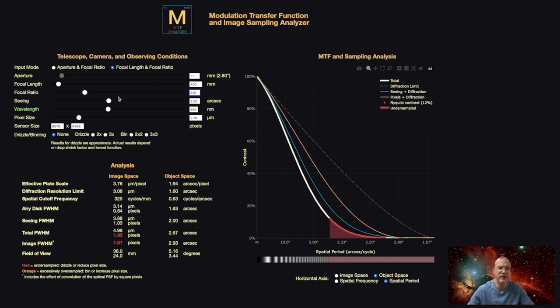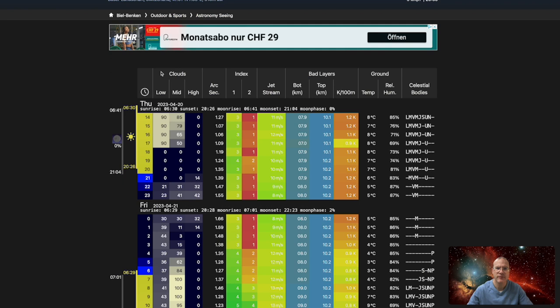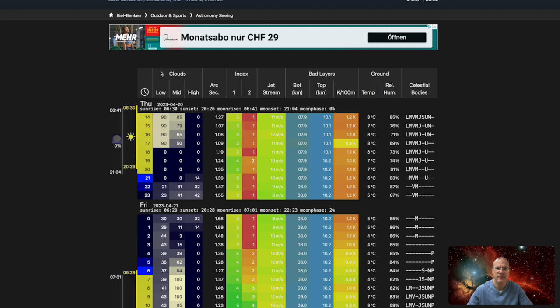Now, the next thing we have to enter is the seeing. So, here the default is two arc seconds, which is called average seeing. But as it really makes sense, you should either enter here the seeing conditions that you typically have at your backyard, if you shoot from there, or where you usually go to shoot. Now, you might ask, how can I know? How can I figure out what my seeing is? And actually, thanks to a member of my Patreon community, I found this great site here.